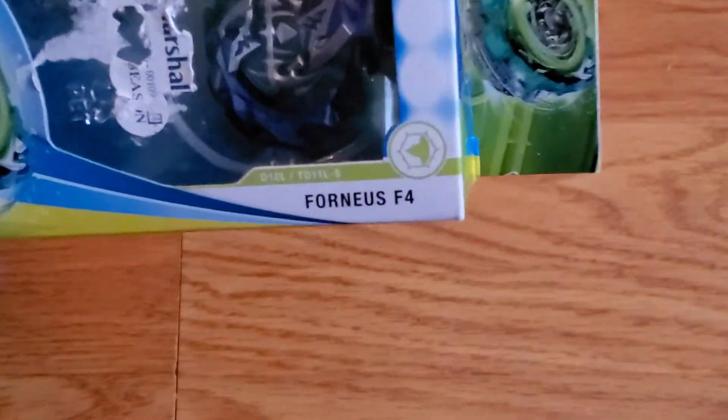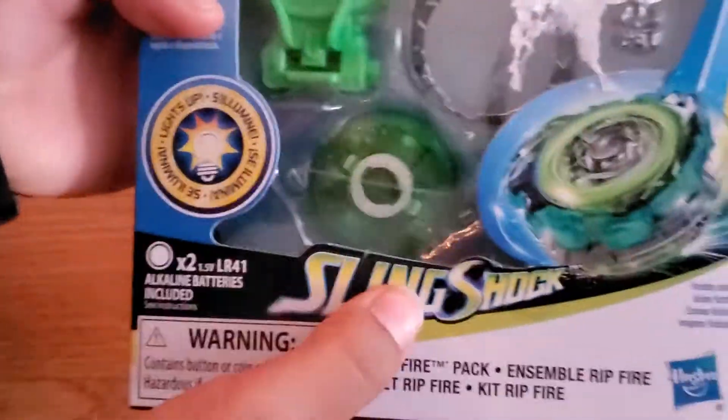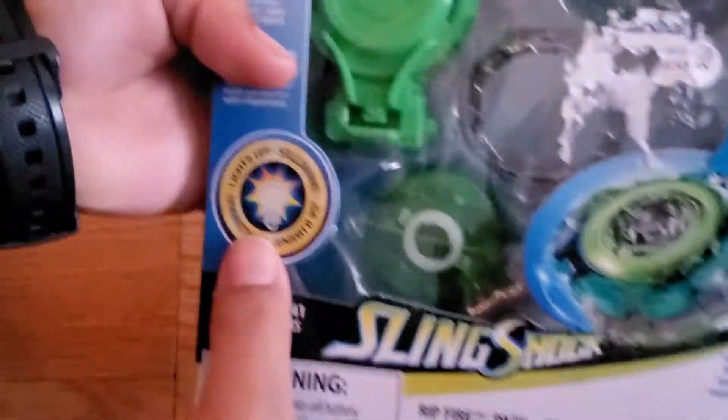It's Fornius Defense Type. And the Sling Shock, of course, and it lights up this performance tip.